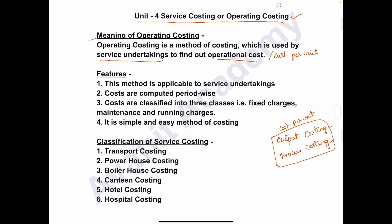Next, we look at the features of service costing or operating costing. Feature number one: this method is applicable to service undertakings — industries engaged in rendering services to consumers, like hospitals, canteen, municipal services, electricity, and telecommunication. Feature number two: costs are computed period-wise.